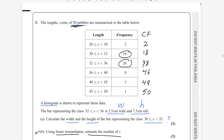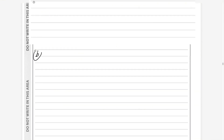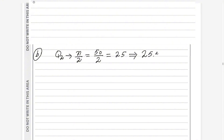Now we need to estimate the median. The median is Q2, and we use the formula: the n/2-th value. There are 50 values, so we divide by 2 to get 25. But 25 is a whole number, so we use 25.5th value. Whenever you get a whole number, we always write it as a decimal — that is the standard approach.